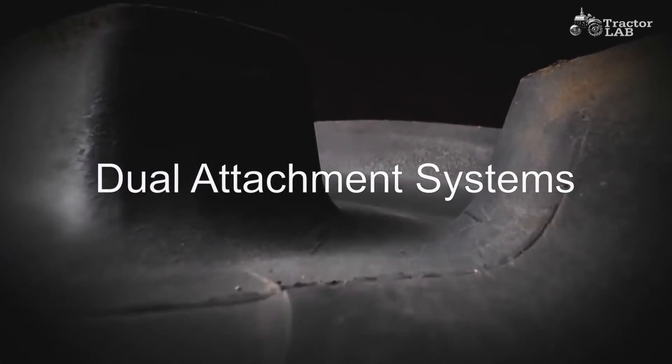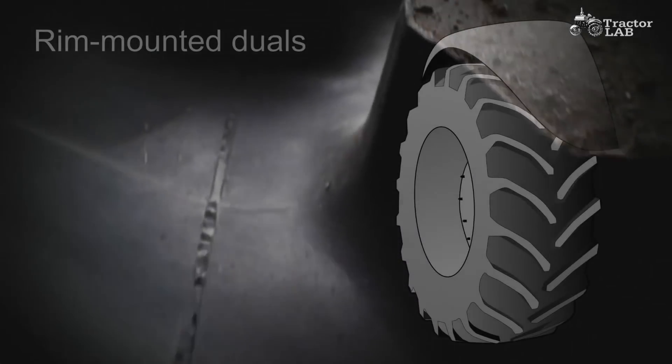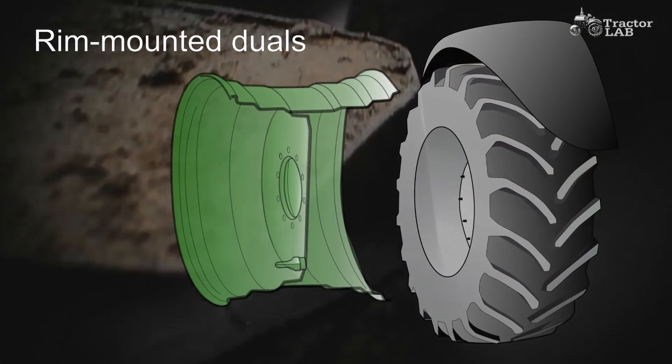Dual attachment systems. While rim-mounted duals are easier to take on and off, the spacer bend between the two rims decreases ground clearance.